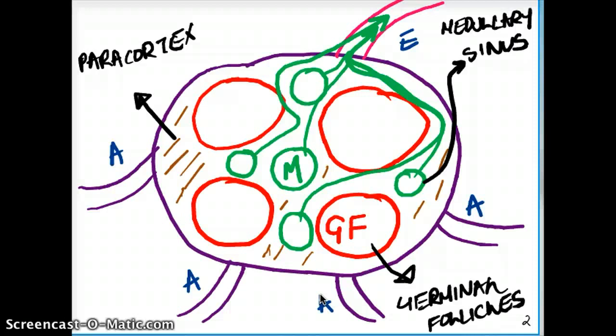Now, the germinal follicles also, when they divide B cells, it is kind of the house of B cells. That's where B cells proliferate. So when B cells proliferate, proliferate, proliferate,